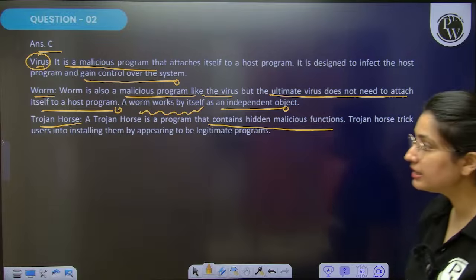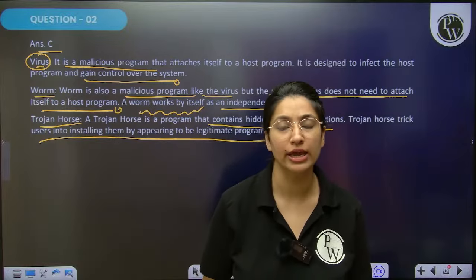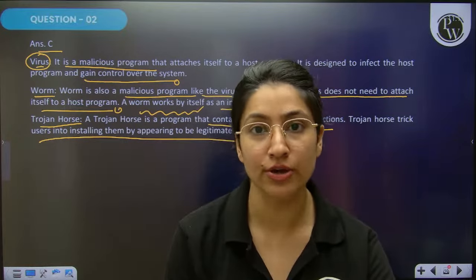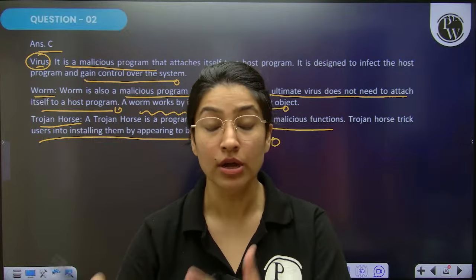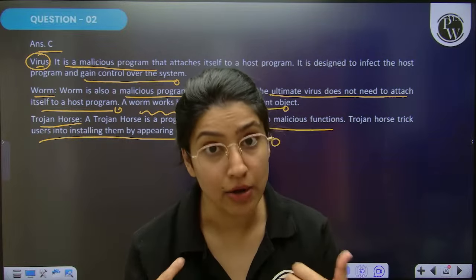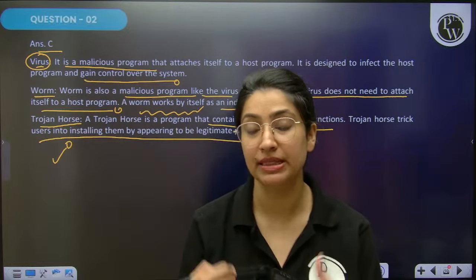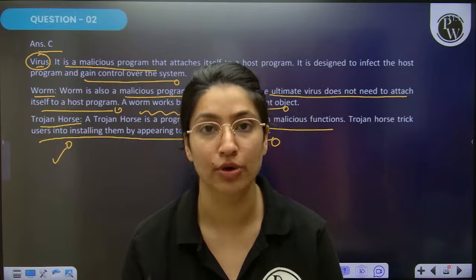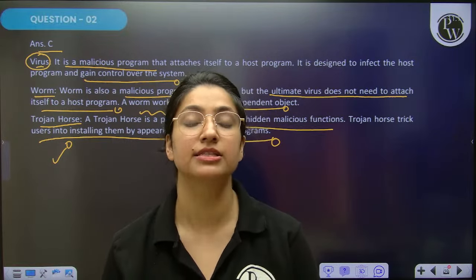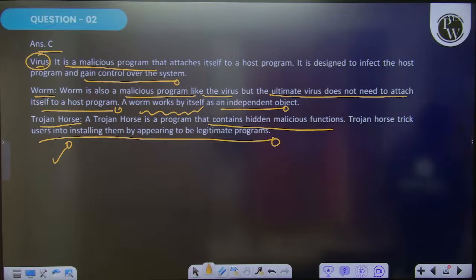Whereas when you talk about a Trojan horse, it is a program that contains hidden malicious functions and tricks the user into installing it by appearing to be a legitimate program. For example, a person pretending to be a bank employee — he is pretending to be official but may not be authenticated. In this way, the Trojan horse tells you it is a legitimate program that will help you, but it is actually malicious software that will harm your system.